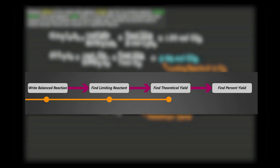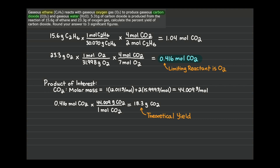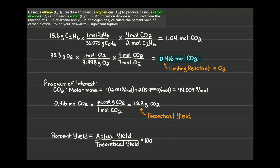The last step is to simply calculate the percent yield. The formula for percent yield is: percent yield = (actual yield / theoretical yield) × 100%. The actual yield is not something you calculate — it must be given to you. In this problem, the actual yield is 5.31 grams of carbon dioxide. Our theoretical yield computed above is 18.3 grams. So: (5.31 / 18.3) × 100% = 29.0%. That is our final answer.